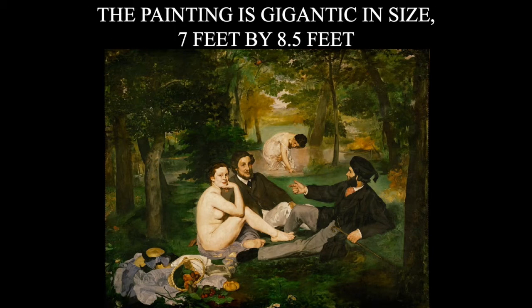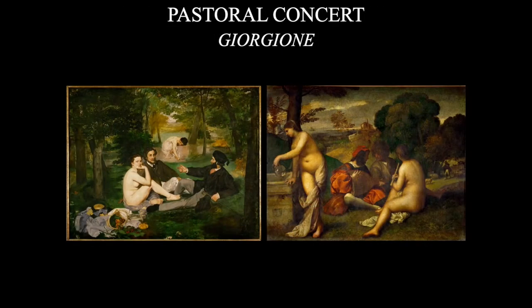The painting itself is gigantic — roughly seven by eight feet, the size of a history, religion, or mythological painting — but it's a genre scene, which should be about a foot and a half by two feet. What really disturbed everyone most was that the men are dressed in contemporary clothing, making this a modern scene rather than a painting of the past. Although this painting does have its roots in works from the past — Manet referenced Giorgione's Pastoral Concert, which shows two nude females with two dressed males in a very similar scene, and which Manet would have seen at the Louvre.